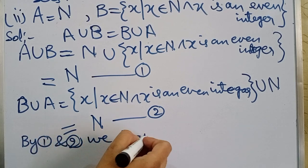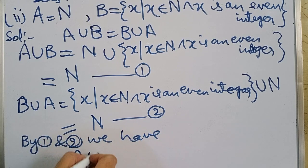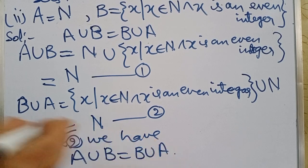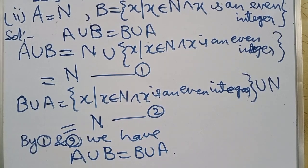we have A union B is equal to B union A.